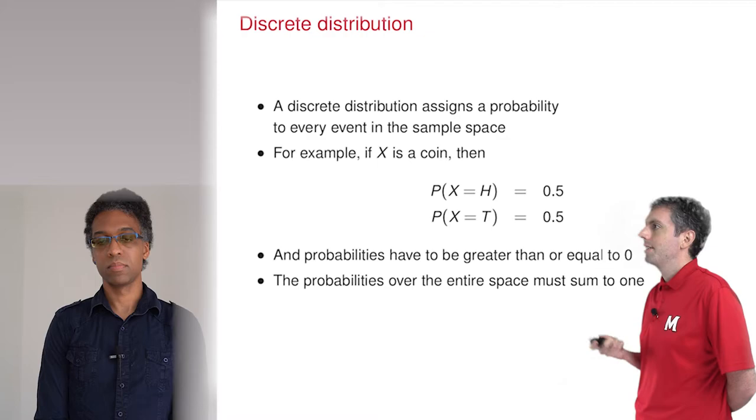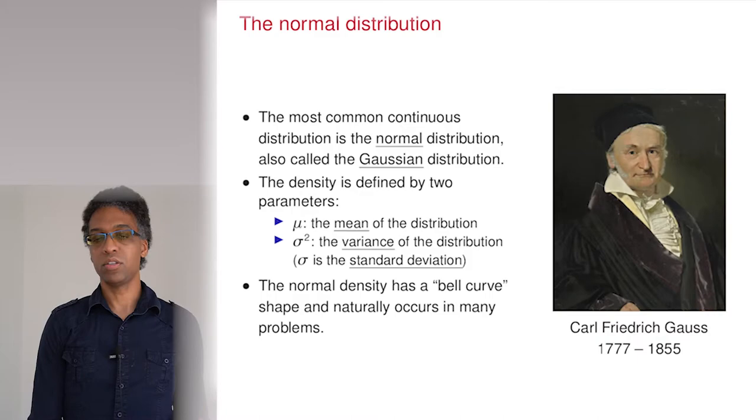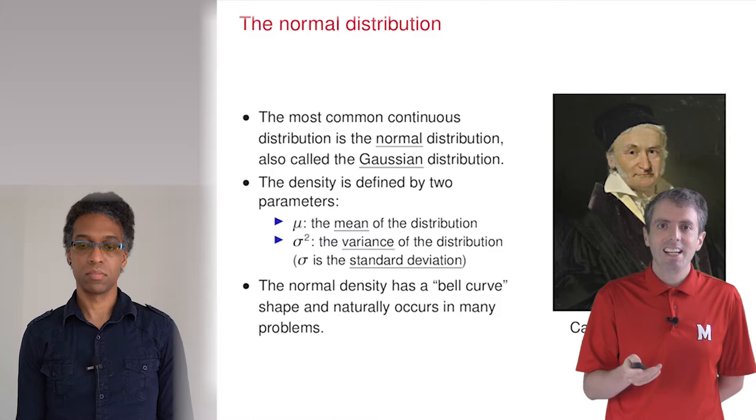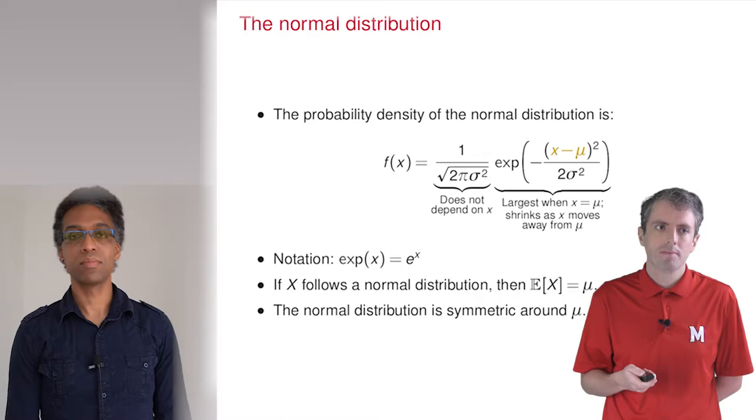Okay, let's move on to continuous distributions. Probably the most famous distribution is called the Gaussian distribution. People might have also heard it referred to as the normal distribution or a bell curve. You've almost certainly seen it. It's defined by this function.